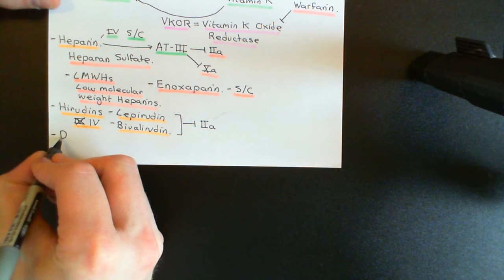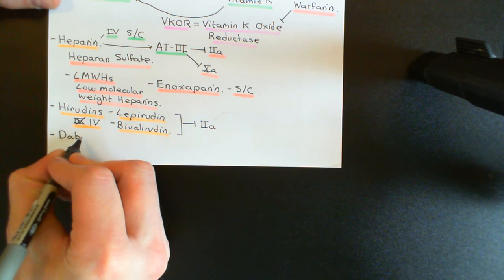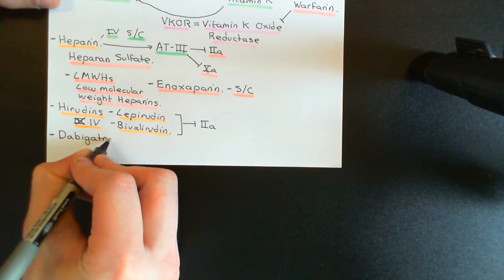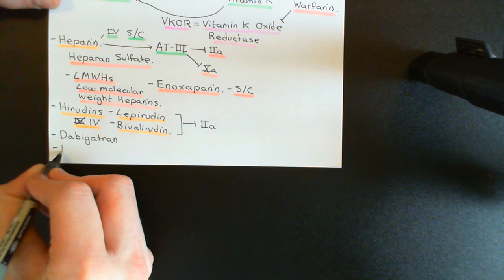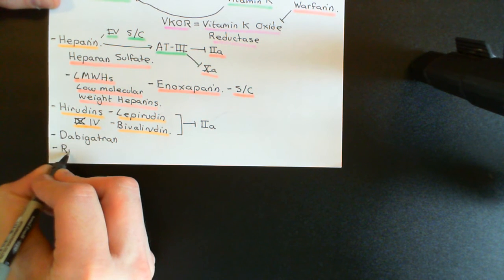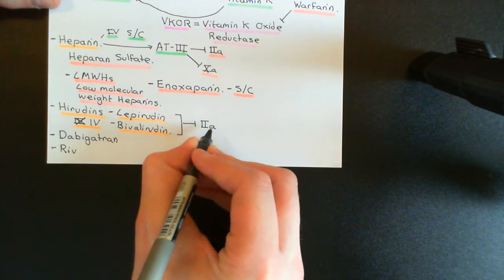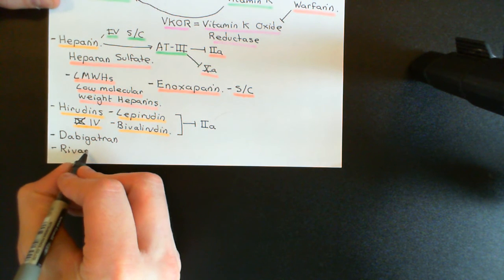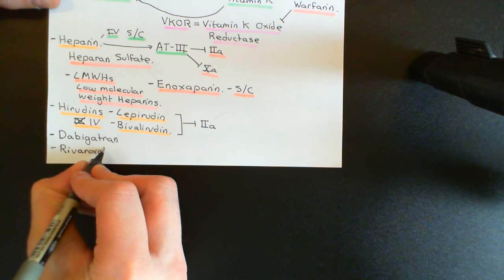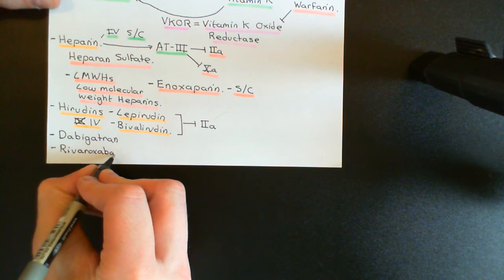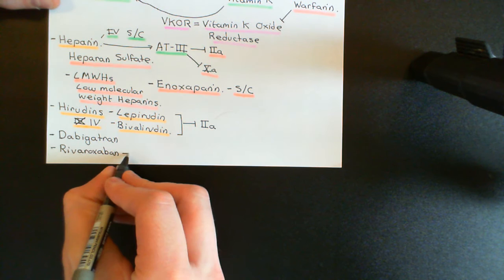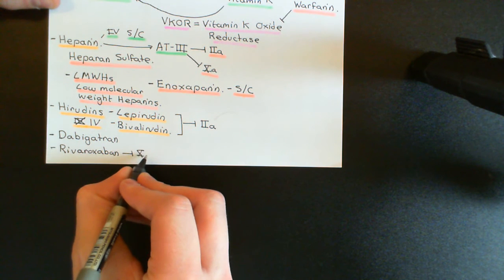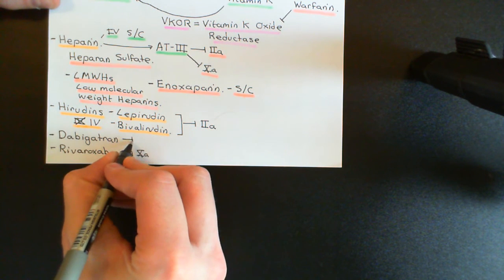The next two drugs that also work by inhibiting coagulation factors are dabigatran and rivaroxaban. Dabigatran also inhibits thrombin, like the hiridins. Rivaroxaban works by inhibiting factor 10A, the one upstream of thrombin.